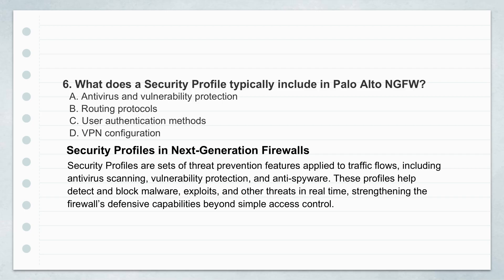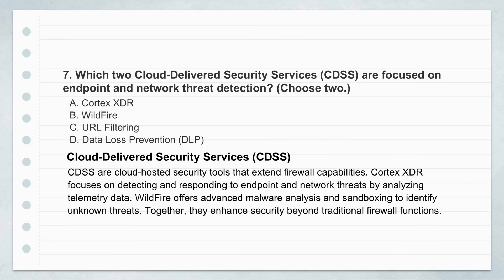Talking about security features on next-gen firewalls — NGFWs — what actually goes into a security profile? The security profile is where you layer on actual threat prevention, beyond just allowing or denying traffic. Typically you'll find antivirus, anti-spyware, vulnerability protection, and other threat prevention tools. These profiles get applied to your traffic, working alongside App ID, to spot and block known threats — malware, exploits, that kind of thing. It's about actively defending, not just controlling access. But the threat landscape moves fast, so you need defenses that adapt just as quickly — that's where cloud-delivered security services, or CDSS, come in, providing dynamic cloud-powered intelligence.